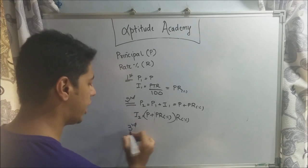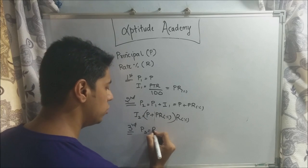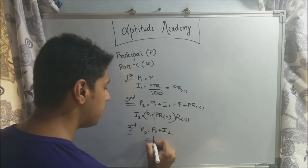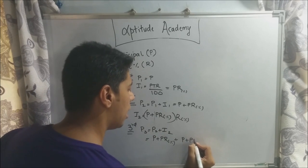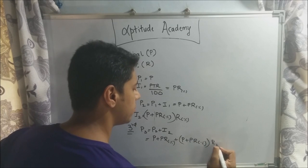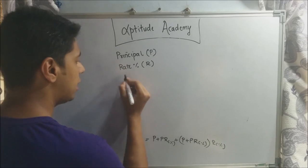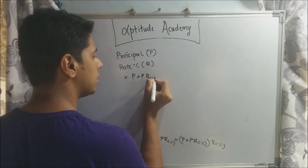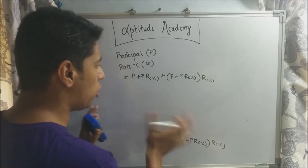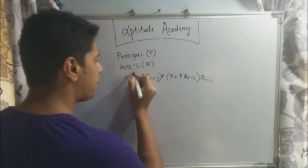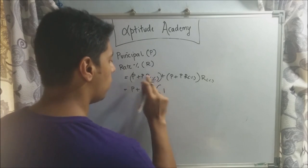For the end of two years, P₃ = P₂ + I₂. Substituting: P₃ = (P + Pr%) + (P + Pr%) × r%. Taking (P + Pr%) common gives (P + Pr%)(1 + r%). This might look complex but it simplifies nicely — we can factor out p to get P(1 + r%)(1 + r%).